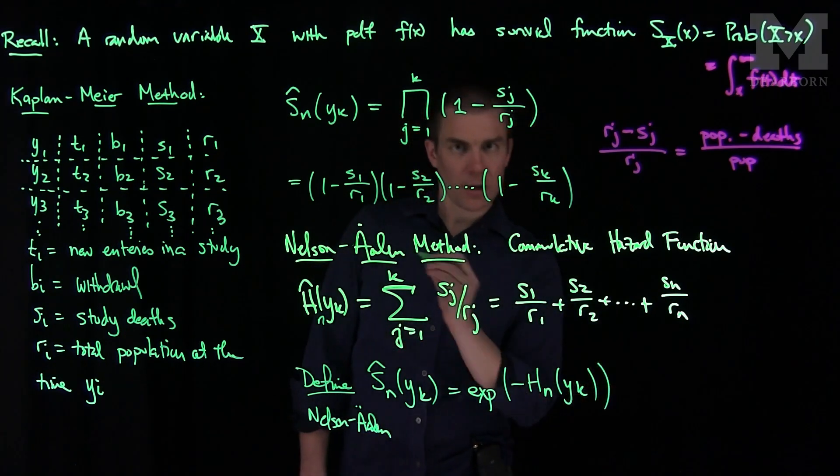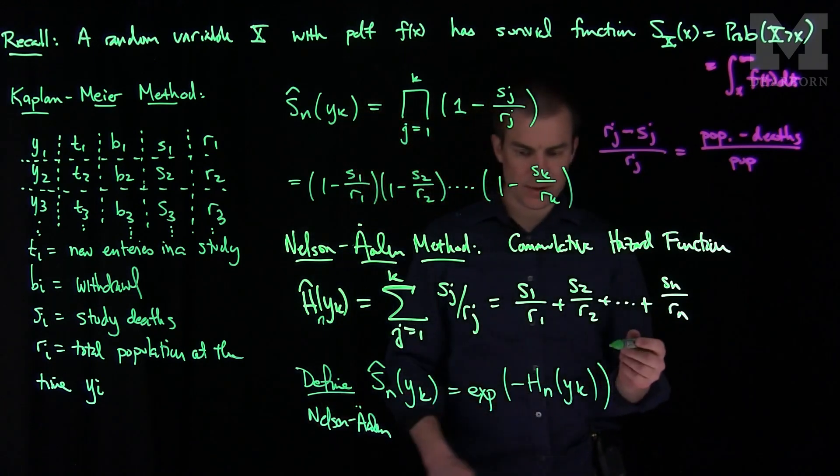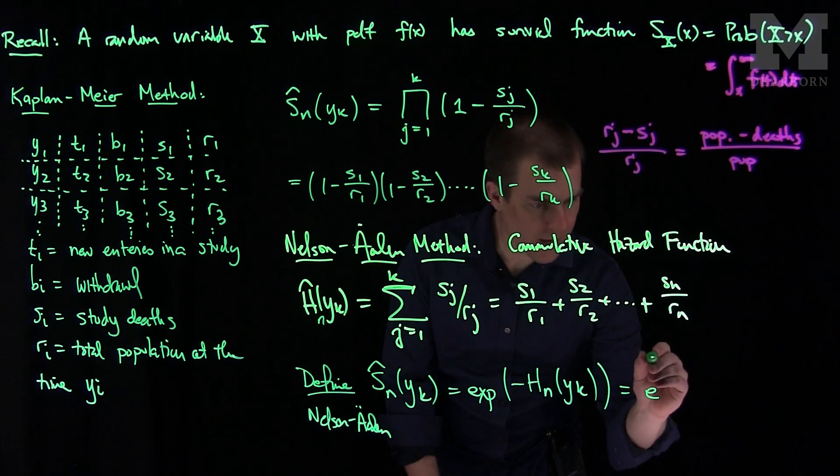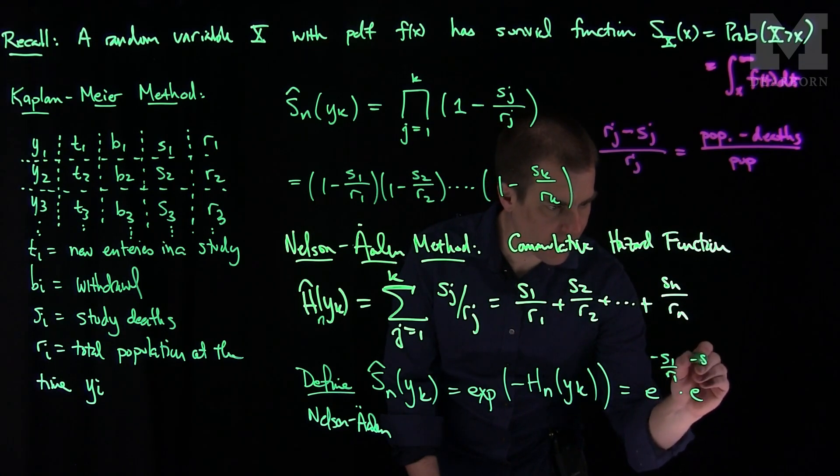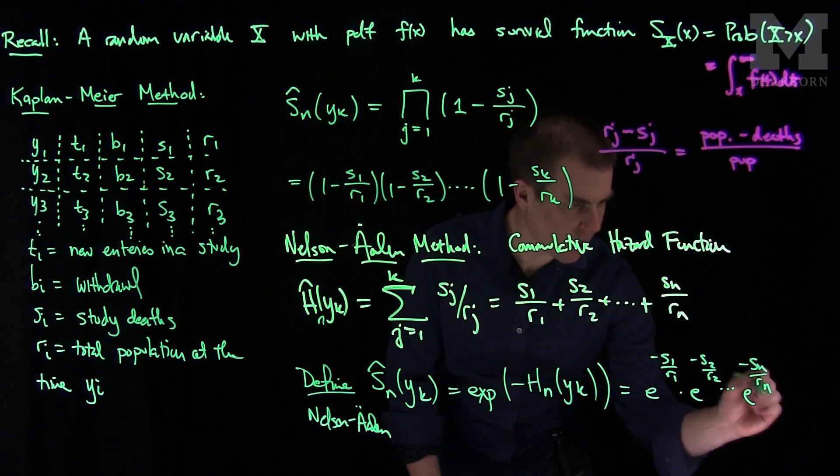And so what we notice here, is we can notice there's a structural similarity between these terms, because the exponential of these things, since it's an exponential, I can write this as e^(-s1/r1) × e^(-s2/r2) × ... × e^(-sn/rn).